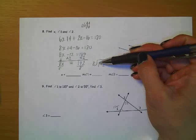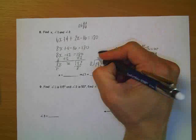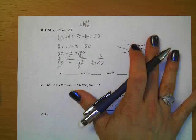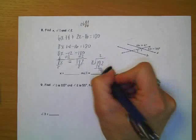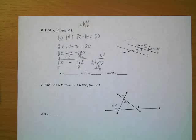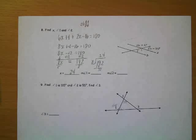8 goes into 1. Can't do it. 8 goes into 19 2 times. 3 left over. 8 goes into 32 4 times. So x is going to be 24. Okay?